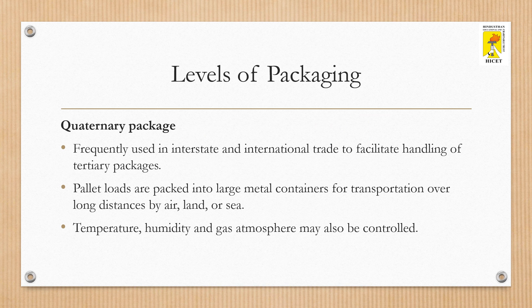A quaternary package is frequently used in interstate and international trade to facilitate handling of tertiary packages. Pallet loads are packed into large metal containers for transportation over long distances by air, land or sea. In quaternary packaging, temperature, humidity and gas atmosphere may also be controlled. For instance, temperature and humidity must be controlled when transportation of frozen foods or chilled meat takes place.